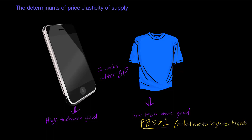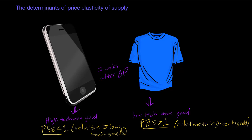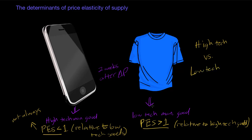The price elasticity of supply is going to be more elastic for low-tech goods relative to high-tech goods. Why? Because high-tech goods require more advanced capital, more advanced technology, higher skilled workers, and more expensive raw materials and machines to manufacture. The price elasticity of supply is going to be less elastic than that for low-tech goods. What I'm pointing out is that relative to lower-tech manufactured goods, high-tech goods are going to have a less elastic response to price changes.